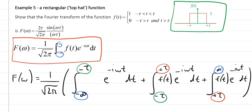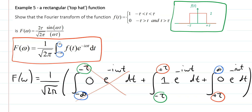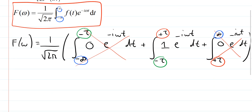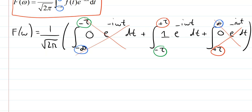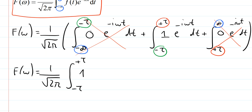We now write in the values of the function. Between minus infinity and minus τ the function has the value 0; between minus τ and plus τ it has the value 1; and between plus τ and infinity it has the value 0. So the first and last integrals both give 0, leaving only the middle integral: f(ω) equals 1 over the square root of 2π times the integral from minus τ to plus τ of e^{-iωt} dt.